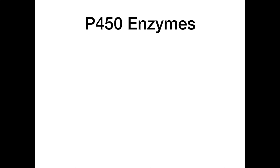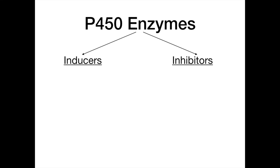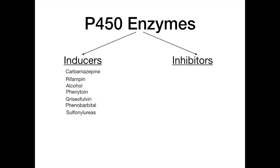When we talk about P450 enzymes, it's best to start by talking about certain drugs that act on the enzymes. Certain drugs can either be inducers of P450 or they can be inhibitors of P450 — not the enzyme itself, but certain drugs induce or inhibit P450. The drugs that act as inducers are: carbamazepine, rifampin, alcohol, phenytoin, griseofulvin, phenobarbital, and sulfonylurea. All of these drugs are P450 enzyme inducers.